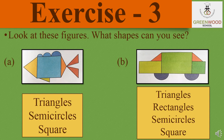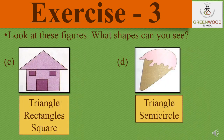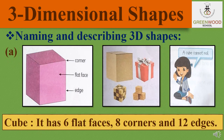Exercise 3: Look at these figures. You have to identify the shapes used to make the figures. In the first one, I can see five triangles, three semi-circles, and one square. In the second figure, I can see two triangles, two rectangles, two semi-circles, and one square. In the third one, I can see one triangle, three rectangles, and one square. In the fourth one, there is one triangle and one semi-circle.